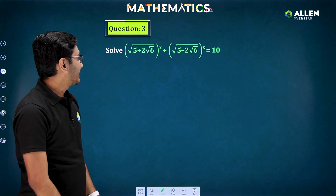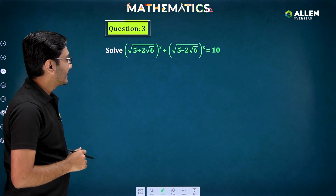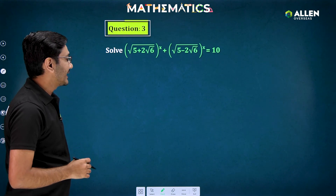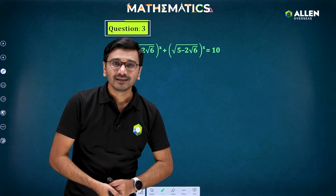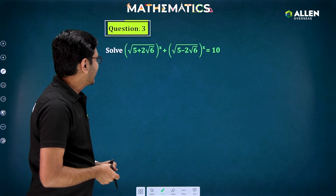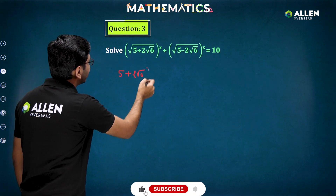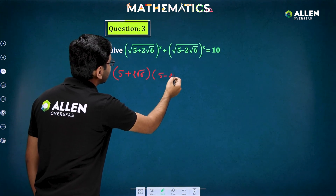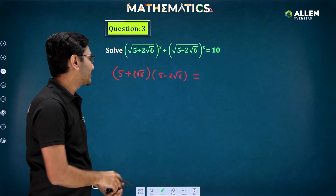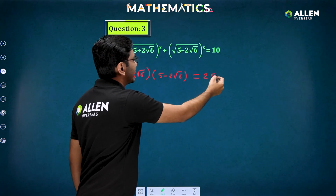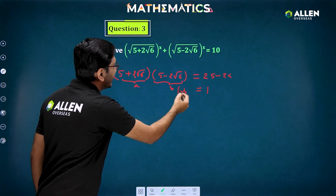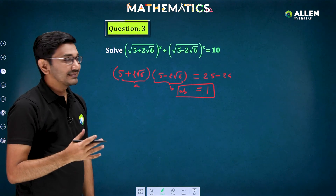The question is: (5 + 2√6)^x + (√(5 - 2√6))^(2x) = 10... actually (5 + 2√6)^x + (5 - 2√6)^x = 10. Notice that (5 + 2√6)(5 - 2√6) = 25 - 24 = 1, using the (a+b)(a-b) = a² - b² formula. So their product is 1 — the required condition is satisfied.